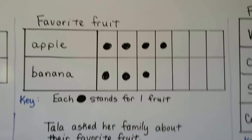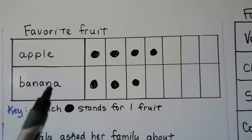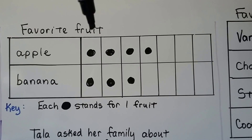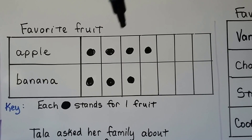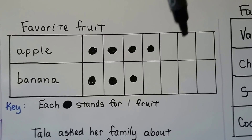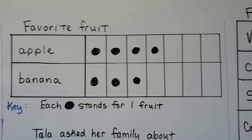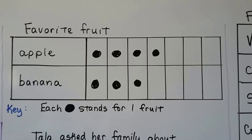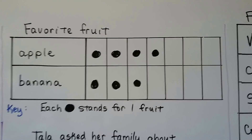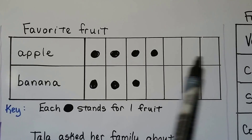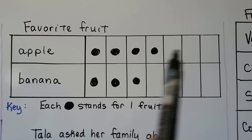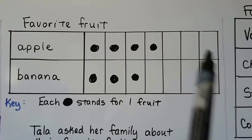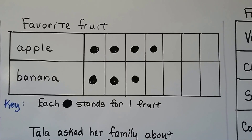Tala asked seven people in her family, so she made seven answer boxes in her picture graph. She asked seven people, so she made seven columns of answer boxes — one, two, three, four, five, six, seven. The reason she did that is: what if all seven people said they liked apples? Then she would have to have room for all seven answers, just in case they all liked the same thing.